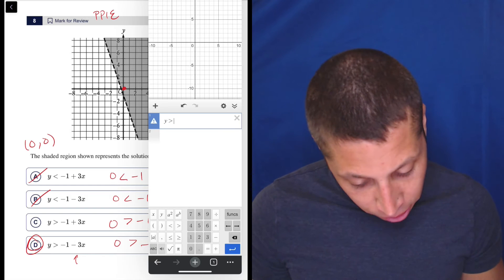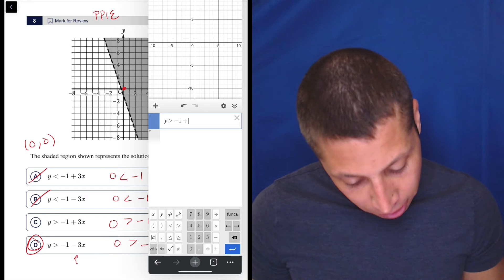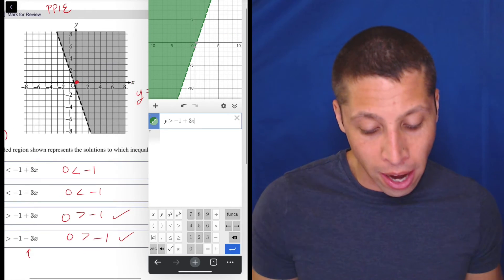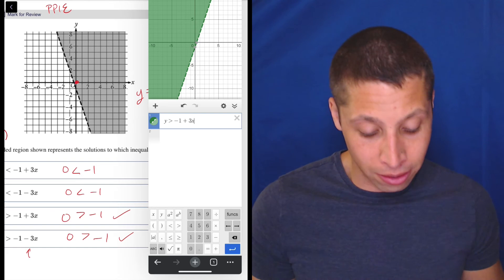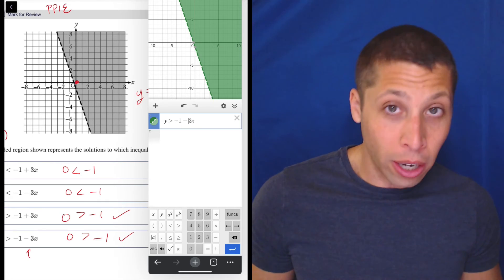So Y is greater than negative one plus three X. You can put it in and you can see that the picture there doesn't match the picture here. They're going in different ways and then you'd be like, okay, now I got to switch that to a negative and it looks pretty good.